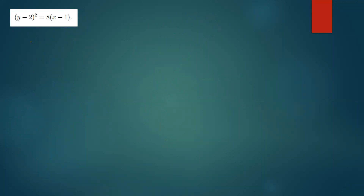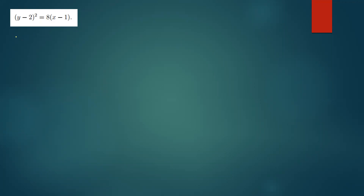This example is (y - 2)² = 8(x - 1). Since the equation is already in its general format, you need to determine the direction the parabola faces. We know y is squared, so it will face either left or right. To determine direction, check the value of p by equating 8 to 4p: so 4p = 8, divide both sides by 4, giving p = 2. Since 2 is greater than zero, we know the direction.